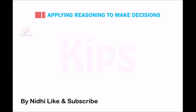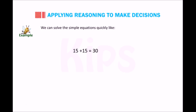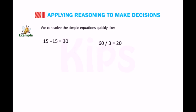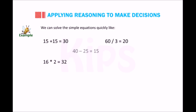For example, we can solve simple equations quickly: 15 + 15 = 30, 60 ÷ 3 = 20, 16 × 2 = 32, and 40 − 25 = 15.